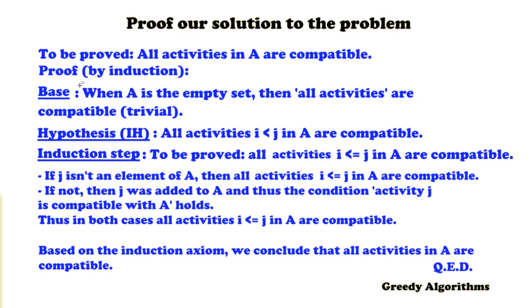Then our induction hypothesis is that all activities up to j in A are compatible. So j is not yet included in the empty set. We haven't decided whether it should be added or not. And this is just a random activity. Now in the induction step, we're going to prove that all activities including j in A are compatible. And for this, we're going to create a distinction in two cases.